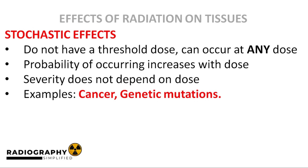A stochastic effect is more likely to occur at a high radiation dose as opposed to a lower dose. Also, the severity of the stochastic effect does not depend on the dose. This means that a low radiation dose could cause a fatal stochastic effect, and a high radiation dose could cause a less fatal effect. Examples of stochastic effects include radiation-induced cancer and the genetic effects of radiation.